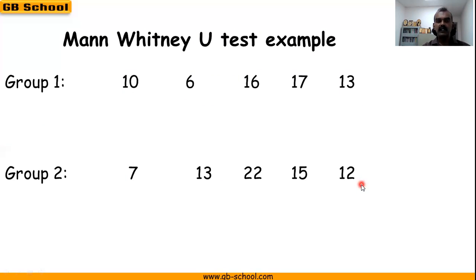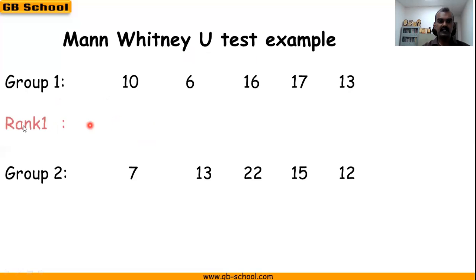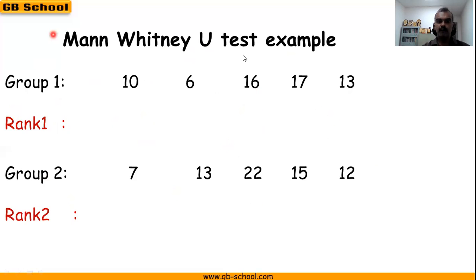Now we want to find out the difference between these two groups by using the manual U-test. In order to use the manual U-test, we have to convert this data into ranks. So let's start ranking from the lowest one, combining all 10 data points.